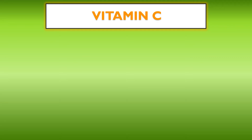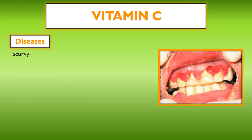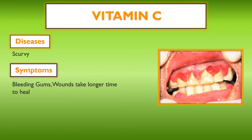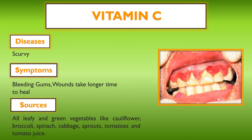The third disease is scurvy, caused due to the deficiency of vitamin C. Symptoms are bleeding gums and wounds that take longer to heal. Sources of vitamin C include green vegetables like cauliflower, broccoli, spinach, cabbage, sprouts, tomatoes, and tomato juice. Consuming all these food items can help the person recover from scurvy.